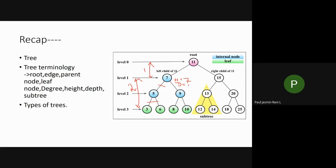The height of all leaf nodes will be zero because they have no branches below them. The depth of the root node will be zero because there are no nodes above it. This is how you calculate height and depth.